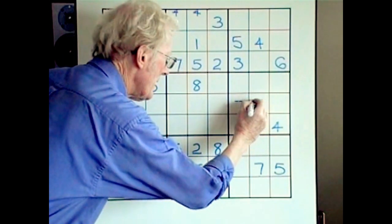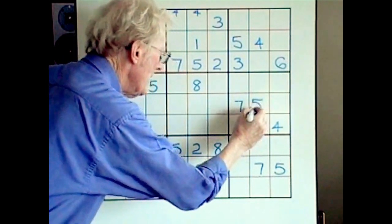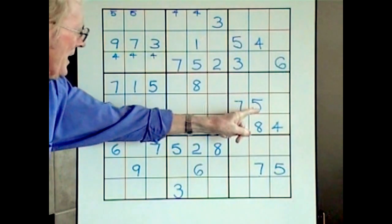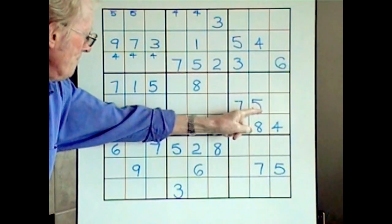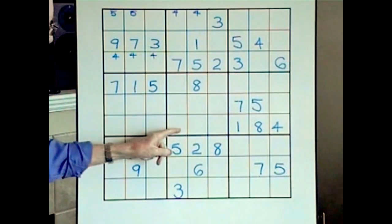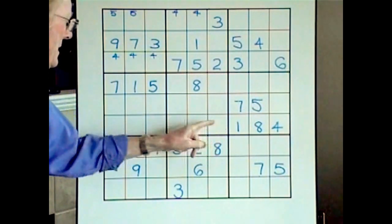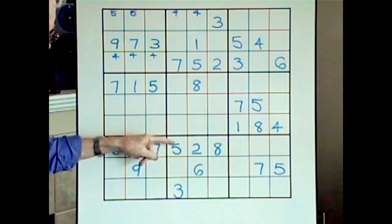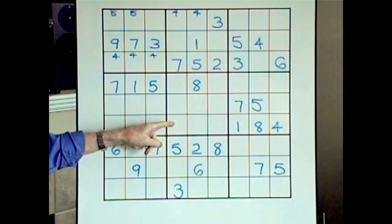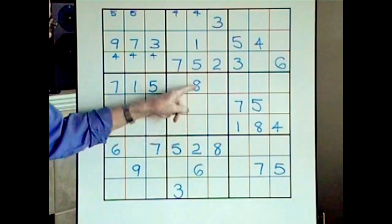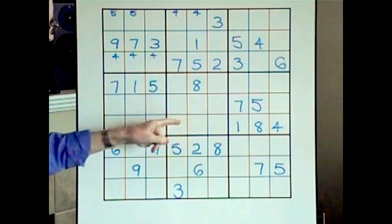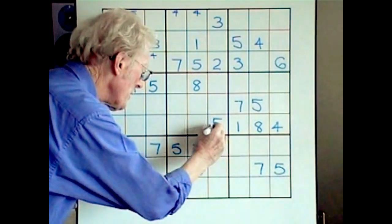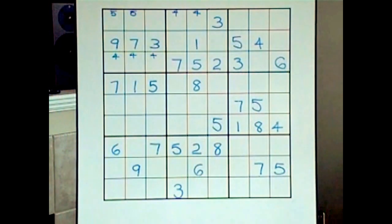So we can put that five right in there. Now what's the ramification of that five? This middle, a top — it has to be in the bottom in here somewhere. It can't be there because of this five, can't be there because of that five, so the five has to go there. So that was very profitable.